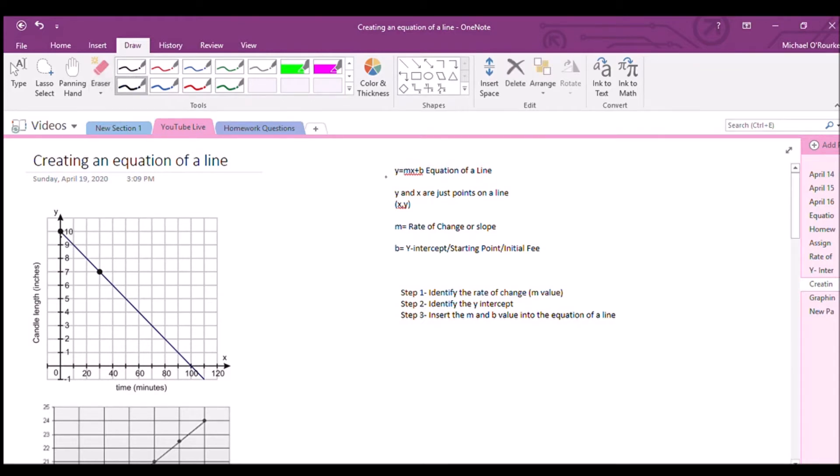So we're over here still. There's my pen right here. We're over here and now we know how to find M. We know how to find B. So we're going to put it together to create an equation of a line.